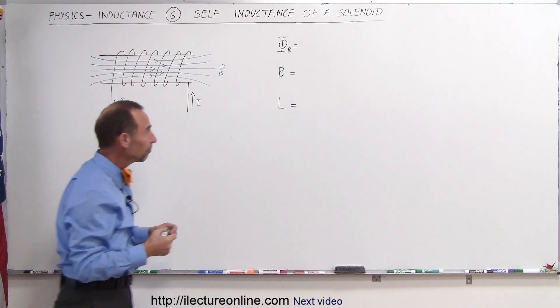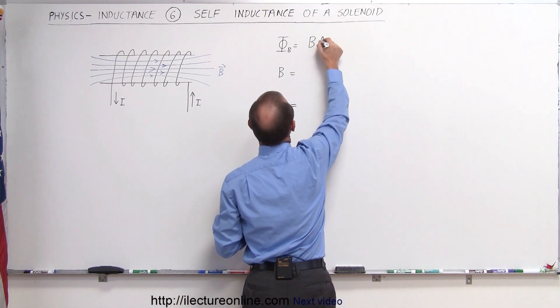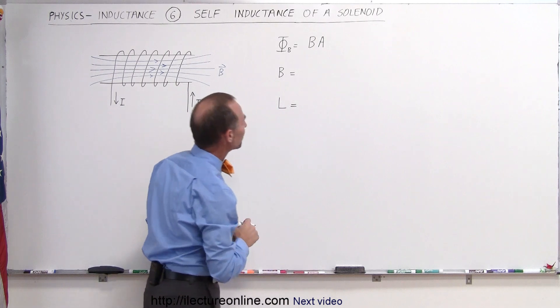And the definition of the flux through the tube would then be equal to the magnetic field strength times the cross-sectional area of the tube. And remember,